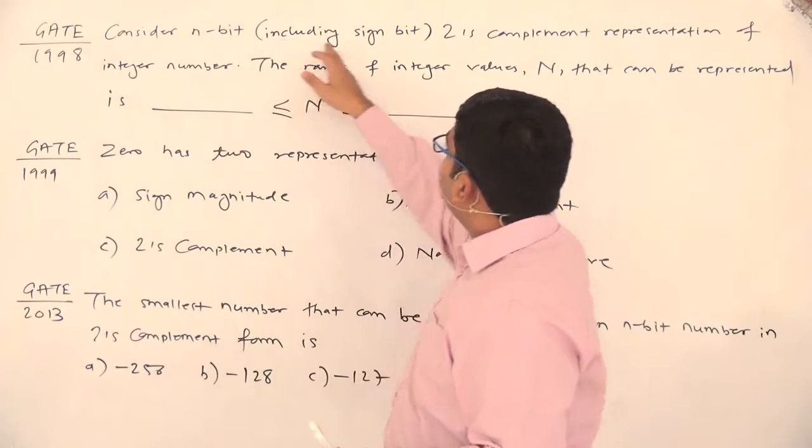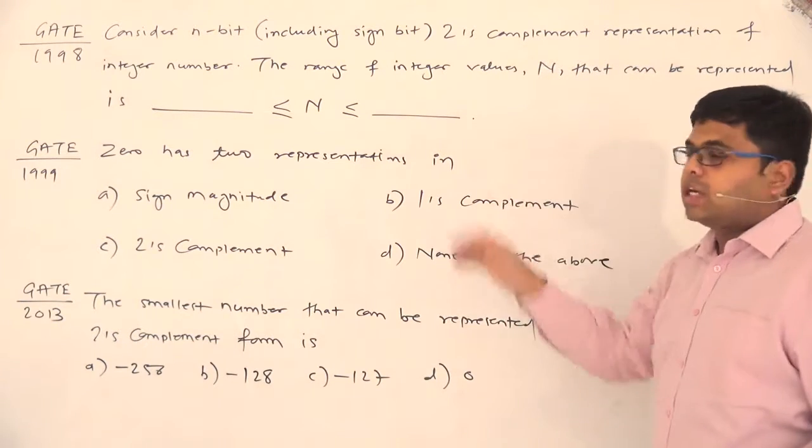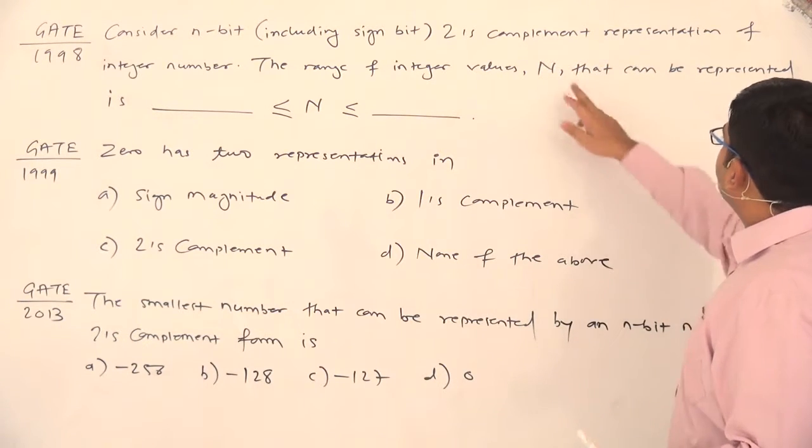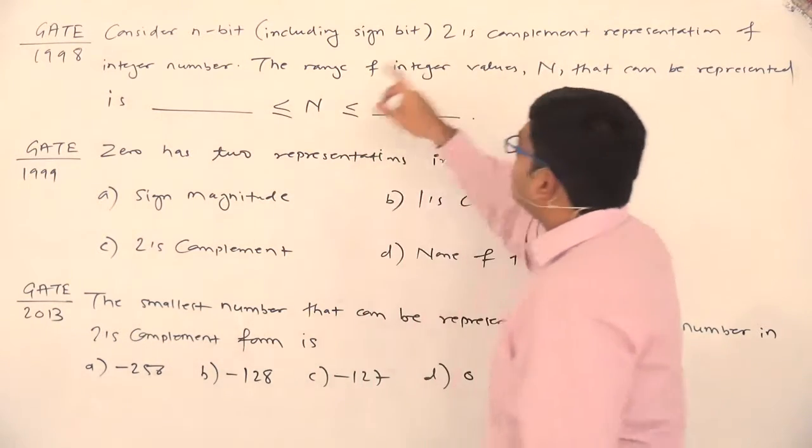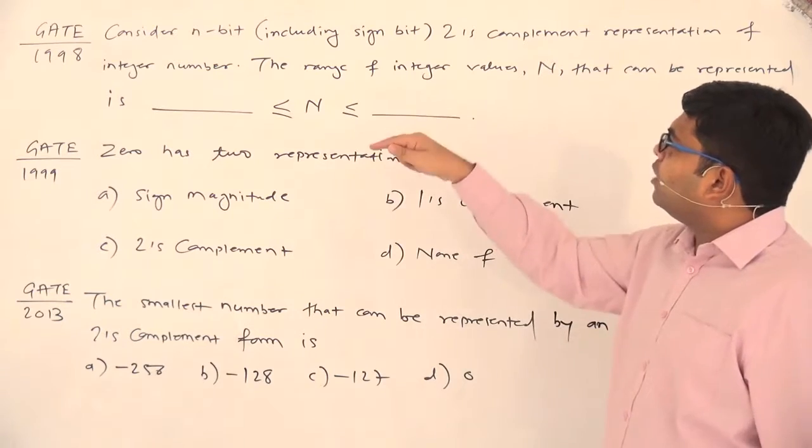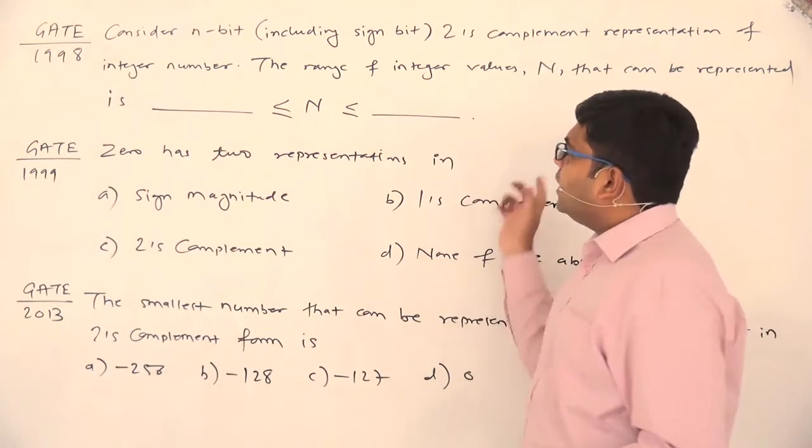Consider n-bit including sign bit 2's complement representation of integer number. The range of integer values n that can be represented is. So see what they are saying, it's an n-bit number and within that n-bit the sign bit is also included as we do usually and they are asking us the range.